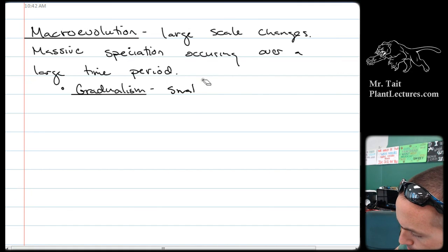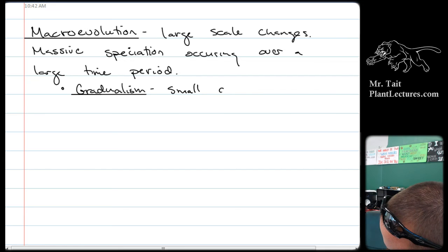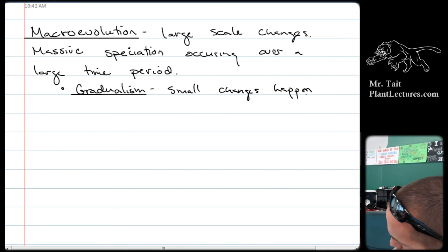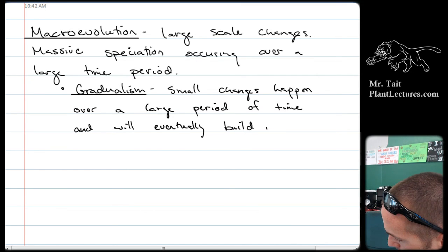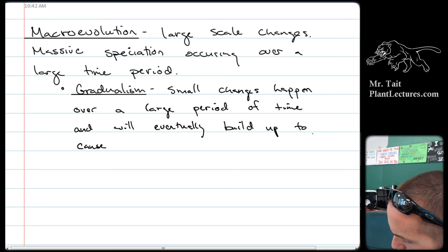Is that small changes happen over a large period of time, and will eventually build up to cause species to look very different from one another.